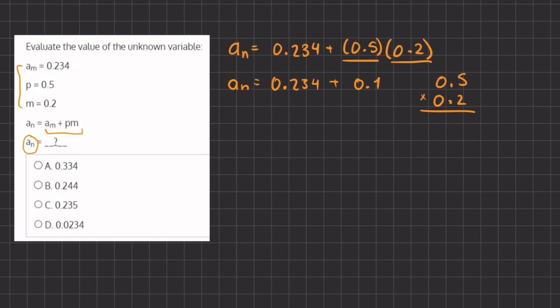Now we're going to add our two decimals to one another, so we have 0.234 plus 0.1, and if we simplify this and add them together, we have 0.334. This will be the final answer for a_n,